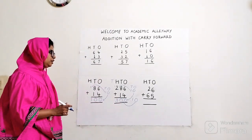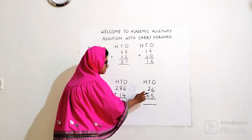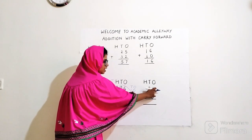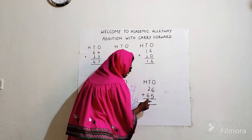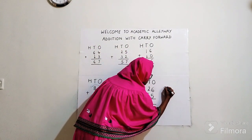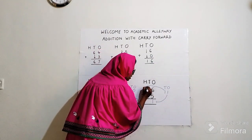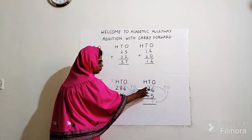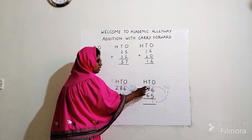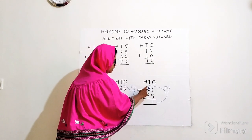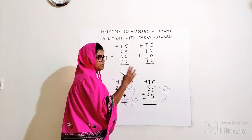Next example. H, T, O. 26 plus 65. Start counting from ones: six plus five. Count after six additional five numbers: seven, eight, nine, ten, eleven. I'm getting a two-digit number, so I can't write it directly. I write eleven on the side: one comes down here and one goes up as carry. Moving to tens: two plus one carry plus six. Two plus one is three, then three plus six — count after three additional six numbers: four, five, six, seven, eight, nine.